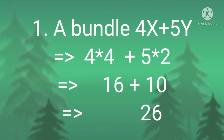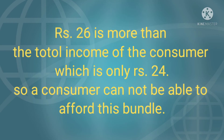Part A: Bundle 4X plus 5Y implies 4 multiplied by price of X (4) plus 5 multiplied by price of Y (2), which equals 4×4=16 plus 5×2=10, implying a total of rupees 26. Since rupees 26 is more than the consumer's income of rupees 24, the consumer cannot afford this bundle.